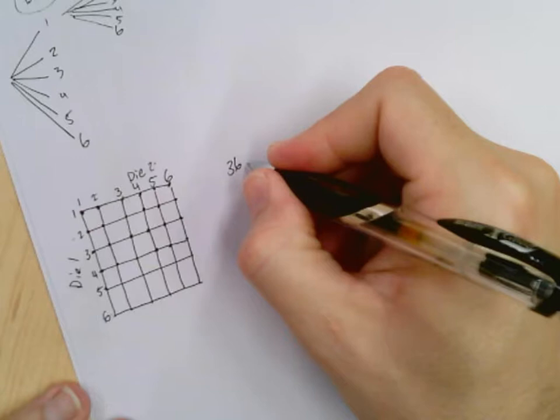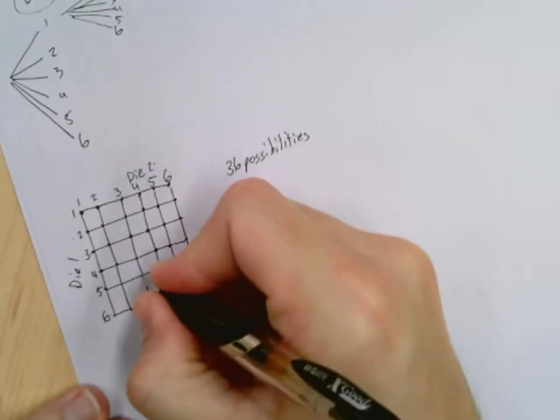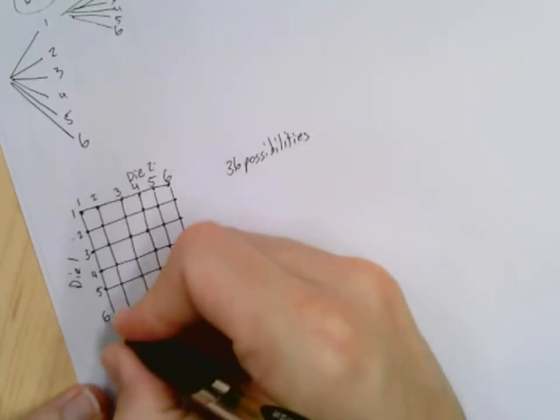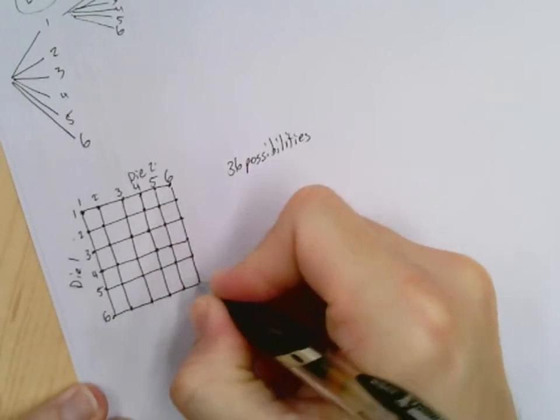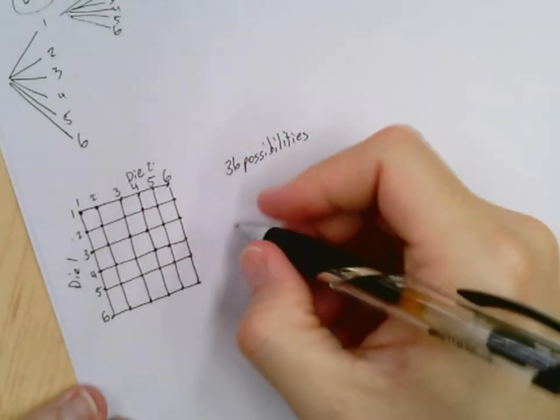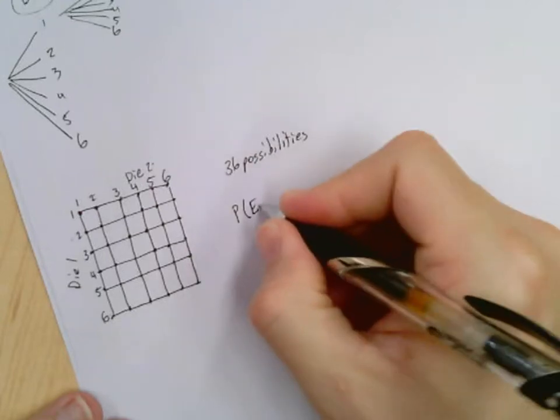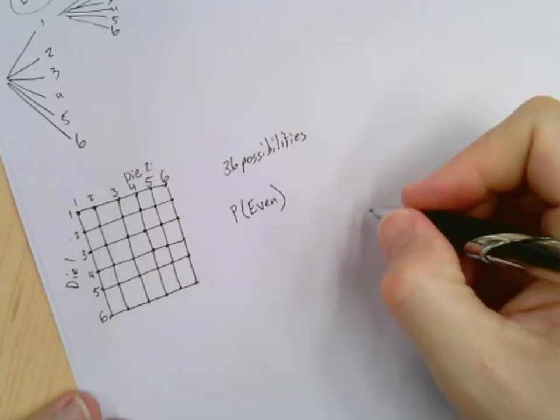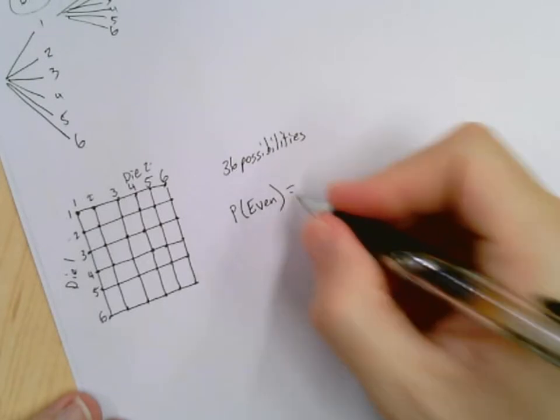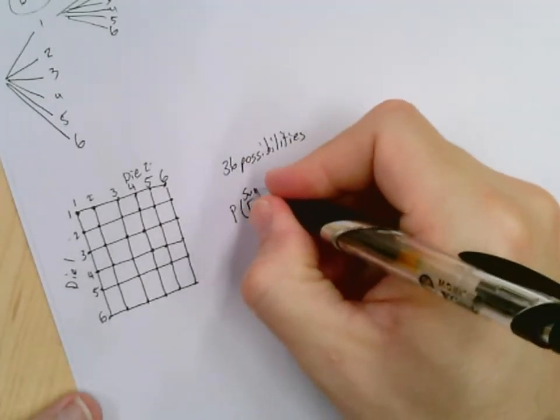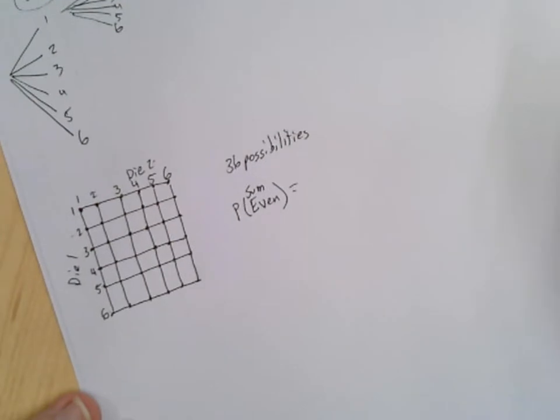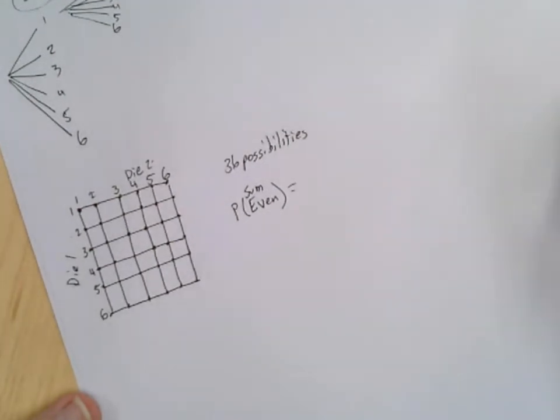Now what this does is it now allows us to answer the same types of questions that we were answering before. So for example, if I wanted to answer what is the probability that the sum is even. Well, how do I get an even sum?